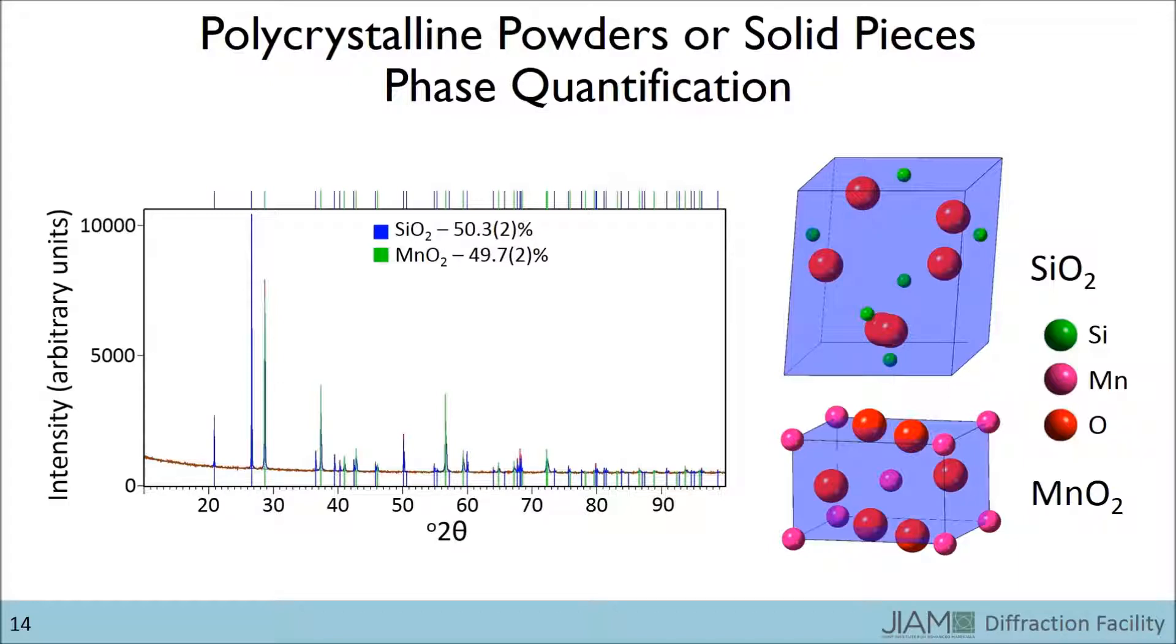The blue lines in the diffraction pattern designate the silicon oxide peaks, while the green lines designate the manganese oxide peaks. The software available in the diffraction facility greatly helps in the determination of which peaks belong to which phase. If the sample is prepared and tested appropriately, you may also be able to determine how much of each phase is in your material.